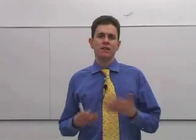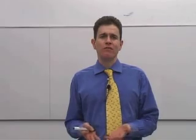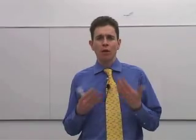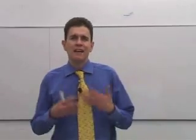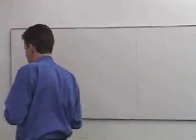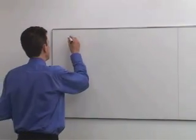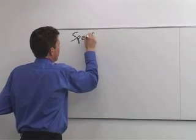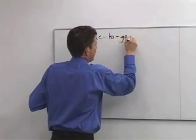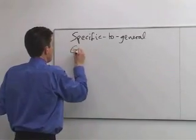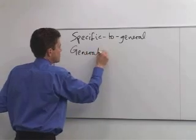What I want to do now is bring together everything that we've done so far on this course and think about the philosophies that exist of building econometric models. Essentially there are two schools of thought in terms of how we should formulate econometric models. The first is the specific-to-general approach, and the second is the general-to-specific approach.